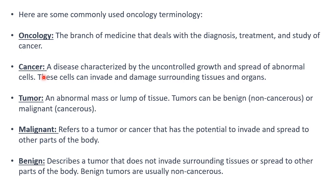Second is cancer. It is a disease characterized by uncontrolled growth and spread of abnormal cells. These cells can invade and damage surrounding tissues and organs, and that is how cancer spreads. It is actually diagnosed when you find a tumor — an abnormal mass or lump of tissue.